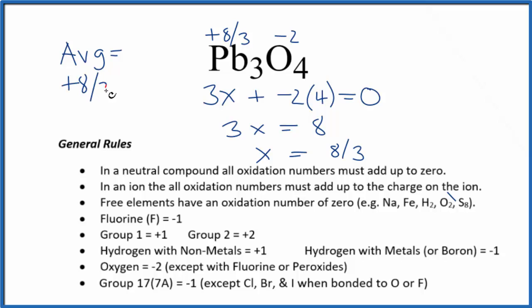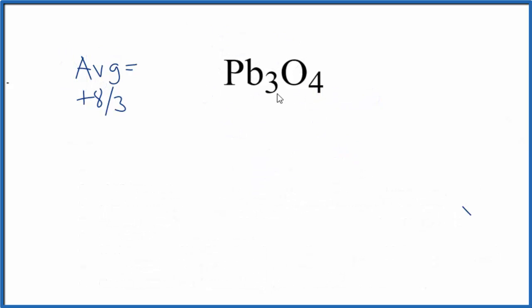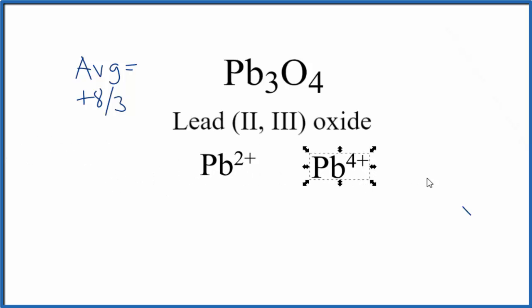Now let's talk about what's really going on here. Pb₃O₄, the name for Pb₃O₄ is lead (II, III) oxide, and that's because it's made up of lead 2 ions and lead 4 ions.